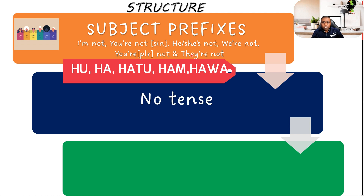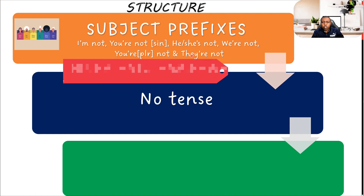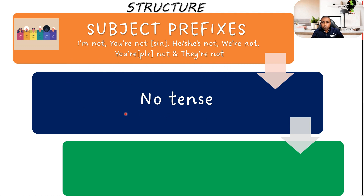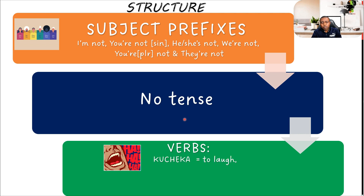On the present tense — present negating now — we do not have a tense marker. That's why I have put 'no tense' here. We're going to add our verbs at the end, just like the examples I've given: kucheka (to laugh), kucheza (to play). So that is going to be our structure.